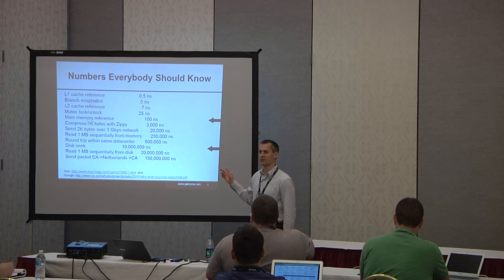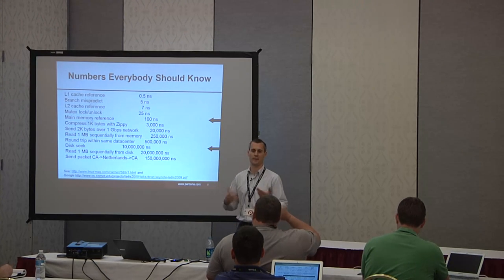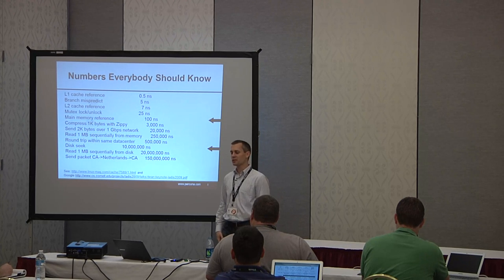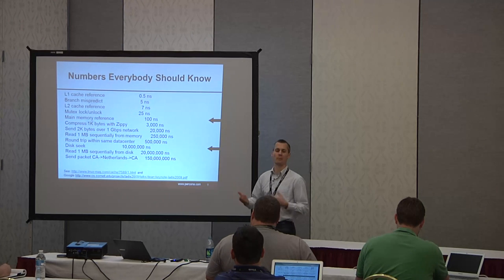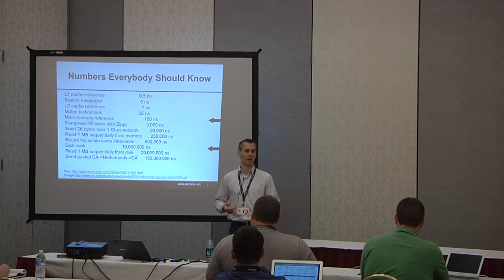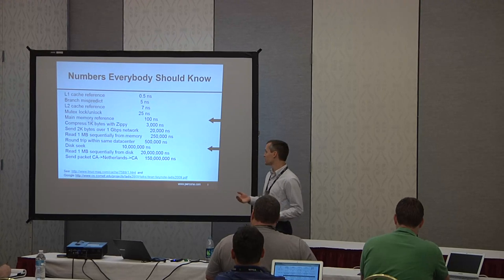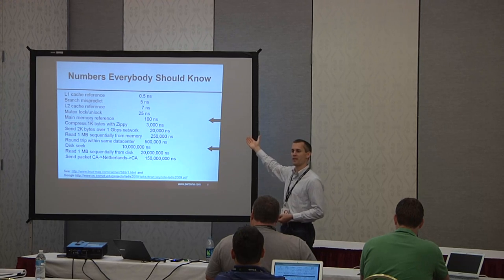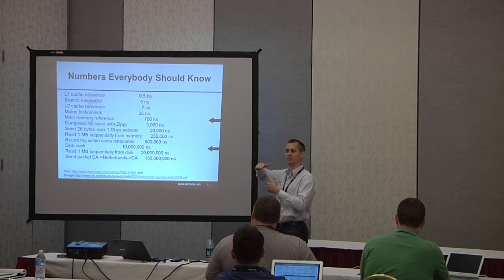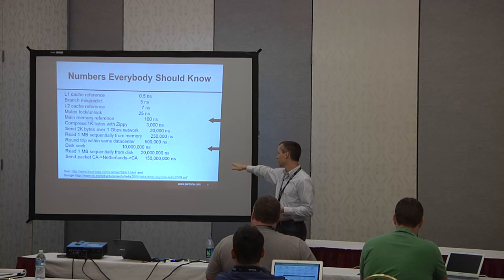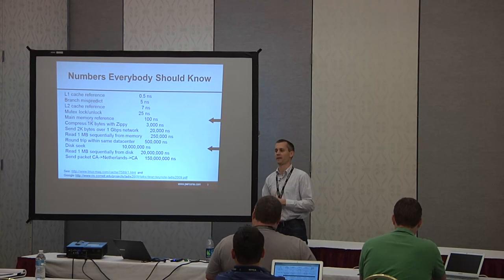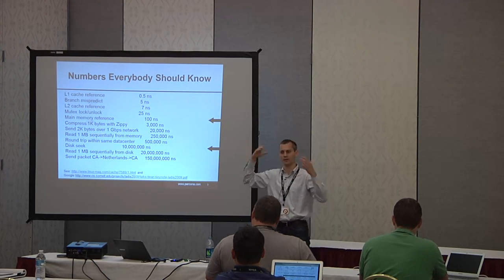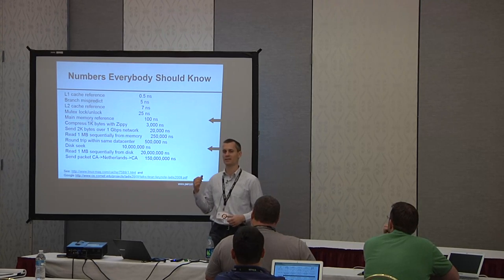This is a cool set of numbers that somebody at Google posted a few years ago. Basically, it shows the ratio of getting an operation done at each different type of memory location — CPU registers, using the network, using a hard drive. What I'm trying to show is that it's orders of magnitude faster to be doing things in the CPU. And as you crawl all the way down to the network, you're looking at something like 150 milliseconds to bounce a packet from California to the Netherlands and back.